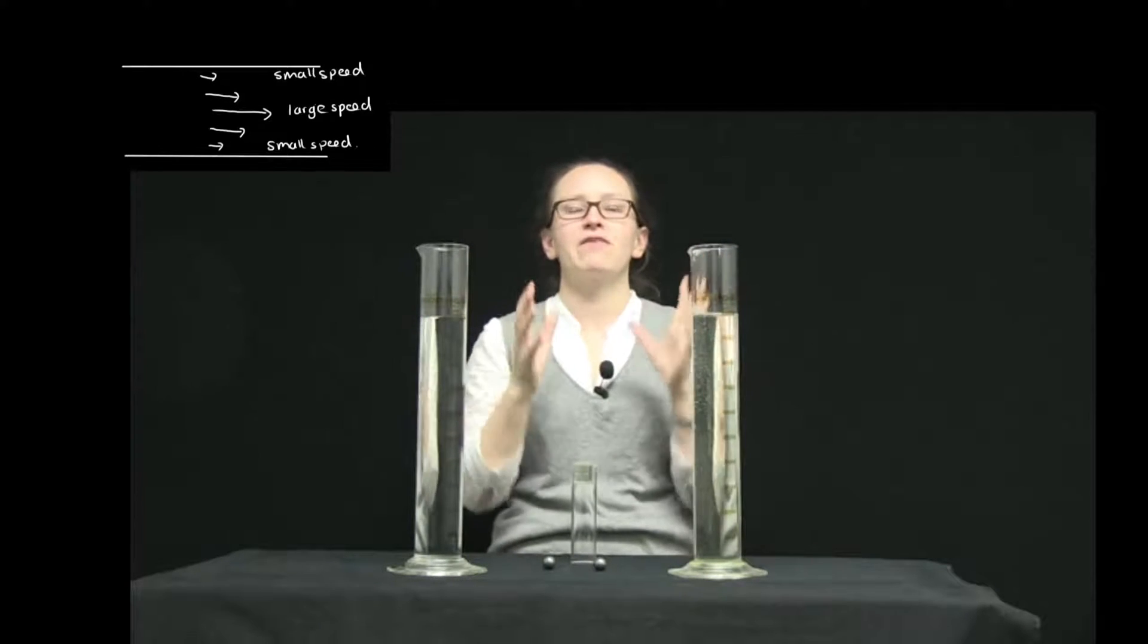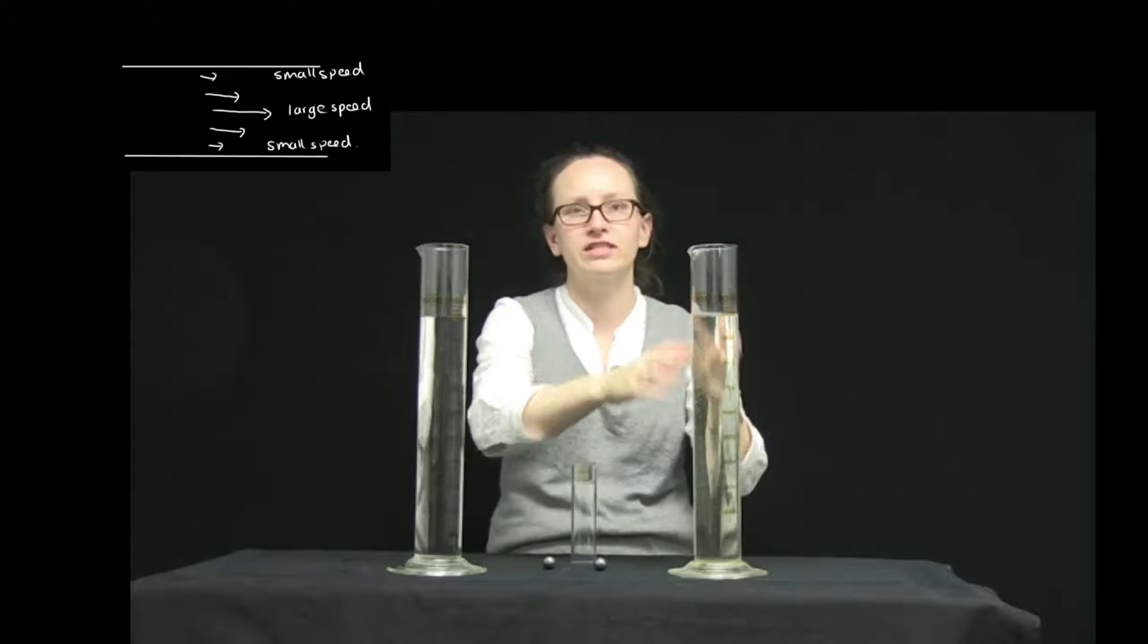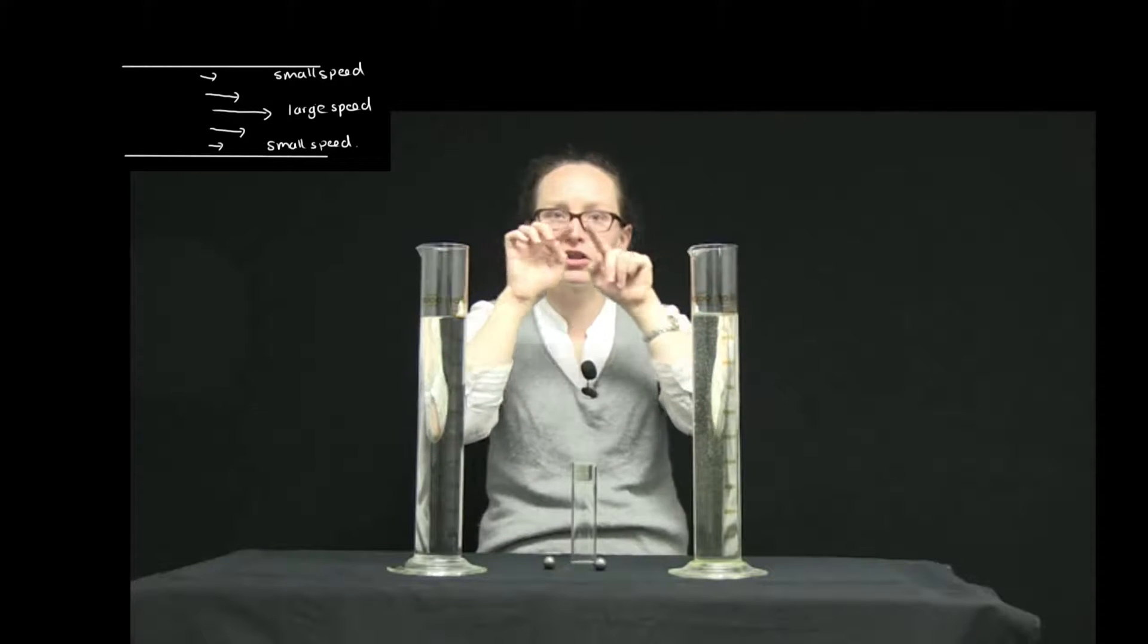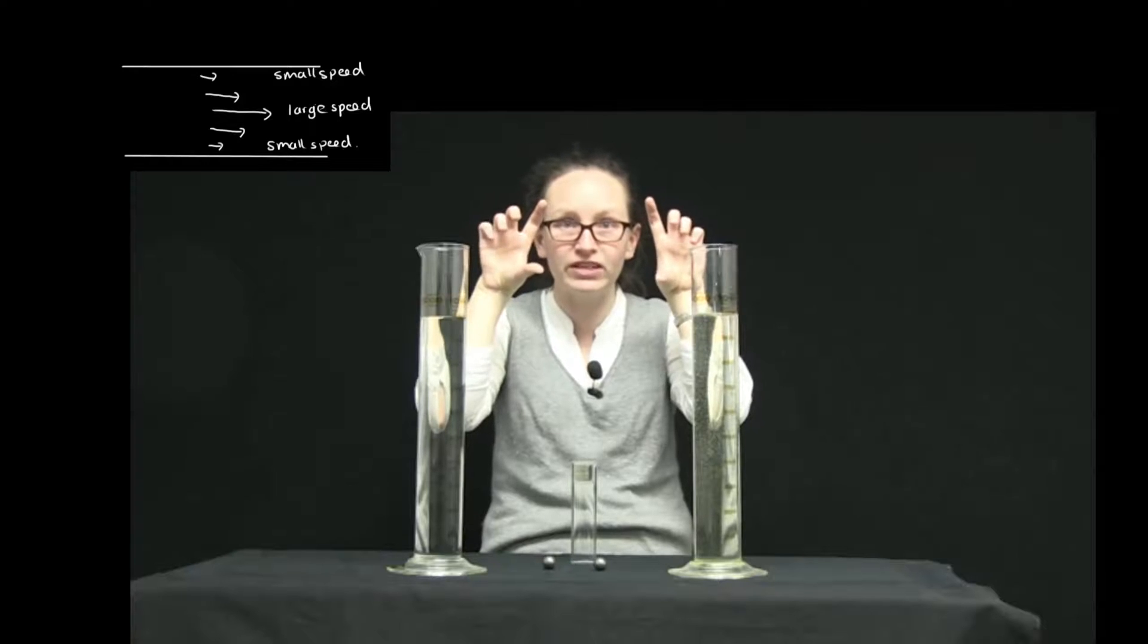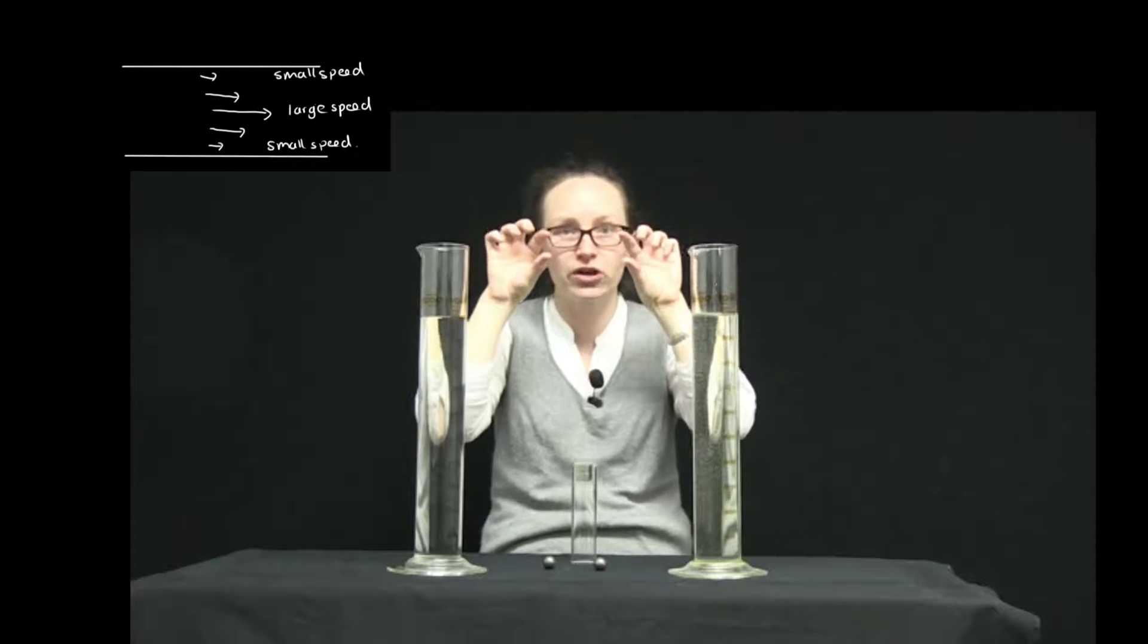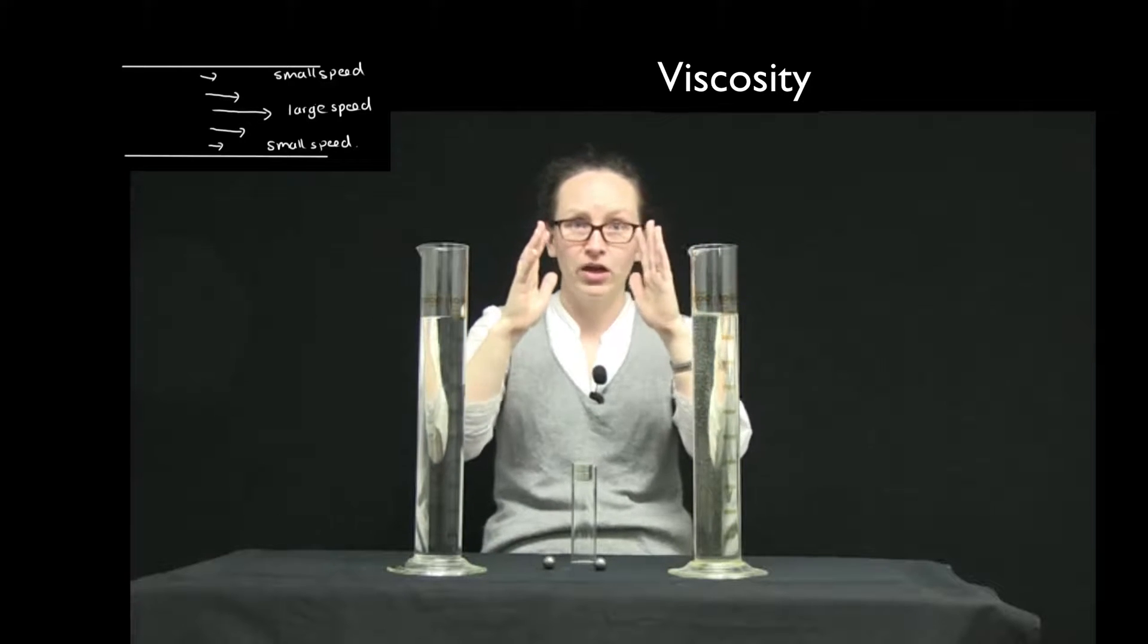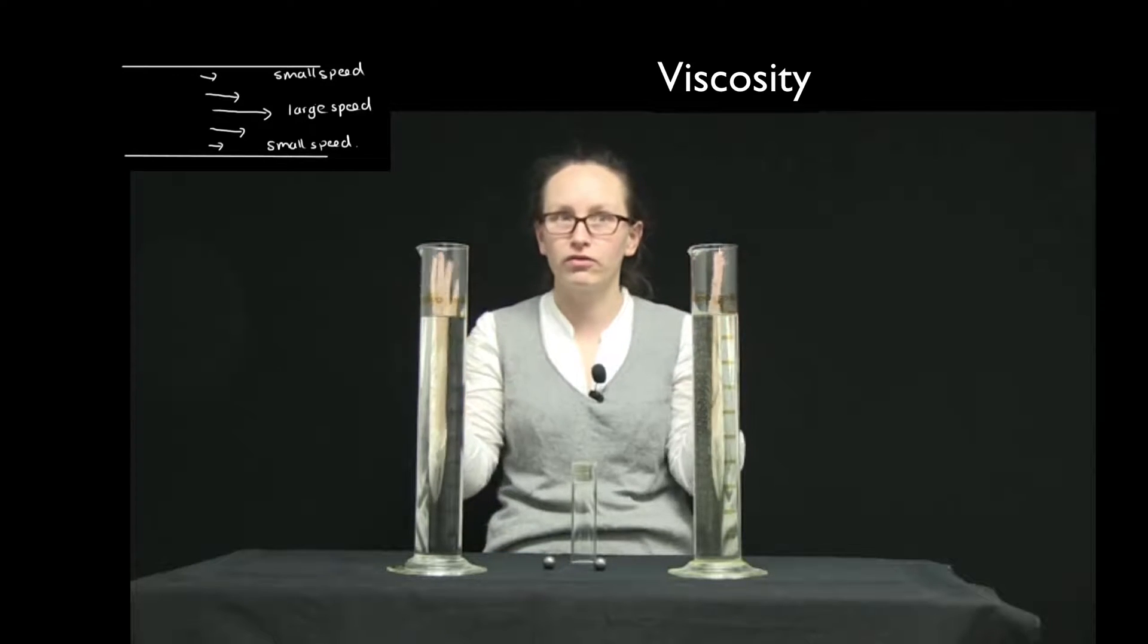If we have a viscous fluid flowing through a pipe, at the edges of the pipe, which is stationary, the fluid flows very slowly because there's lots of friction there trying to stop it flow. As we get closer to the centre of the pipe, instead of being next to the pipe, the fluid in the middle is next to other fluid which is flowing slowly, and so the fluid in the middle actually flows a little bit faster than the fluids on the outside. This is caused by the viscosity or the internal friction of the fluid.